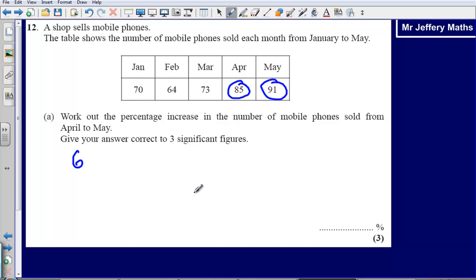What we need to do is work that out as a percentage increase from April to May. The way that we do that is we simply take the amount that has increased, divide it by the amount that was sold in April, 85, and multiply it by 100. That will tell us what our percentage increase is.